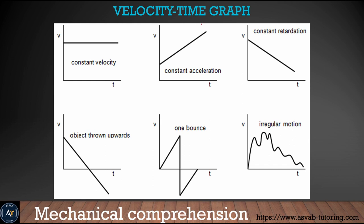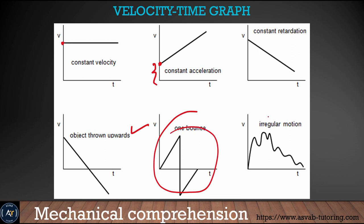The next thing we'll learn is the velocity-time graph. From experience, students are often asked in the test to identify what graph is what, so make sure that you know the difference between a distance-time graph and a velocity-time graph. Constant velocity appears as a straight horizontal line. Constant acceleration means you are starting at a certain velocity and speeding up. Then there is constant retardation. Next is an object thrown upward — its velocity-time graph looks like that. A ping pong ball thrown upward with a first bounce looks like that. The last one is irregular motion — stopping and going repeatedly.